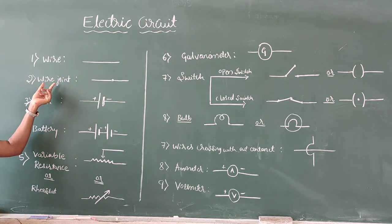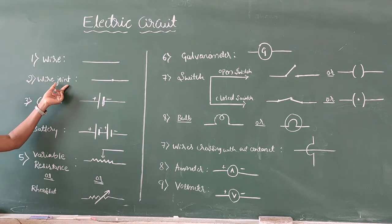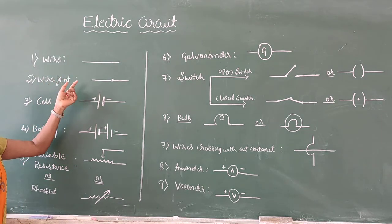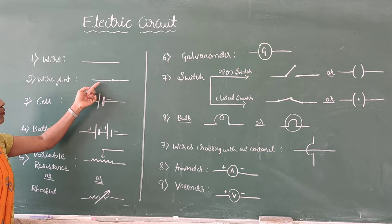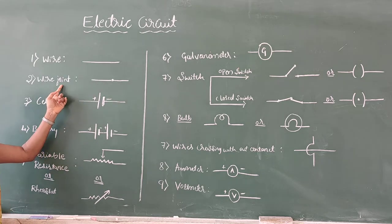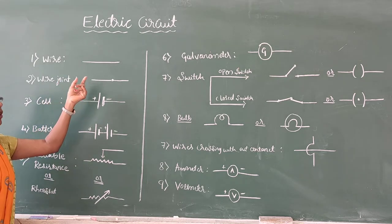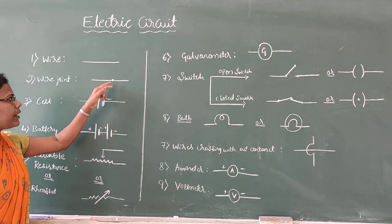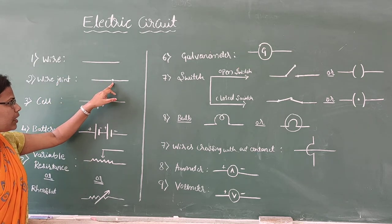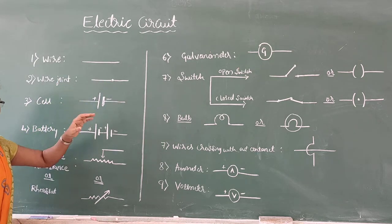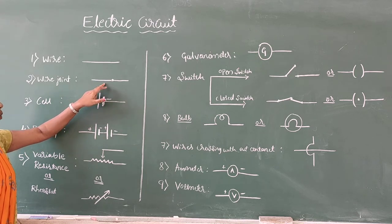The second symbol is for a wire joint. This is the symbol for a wire joint — it is used when two wires are connected to each other.